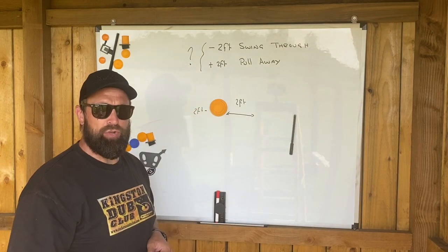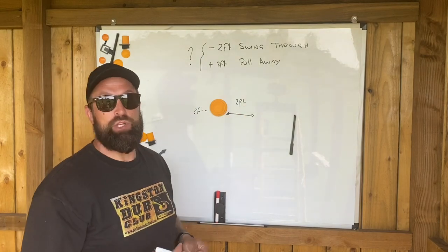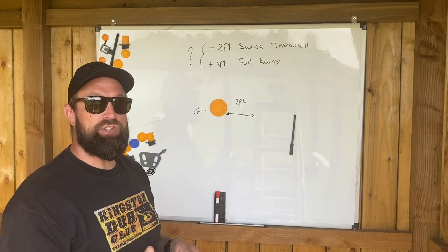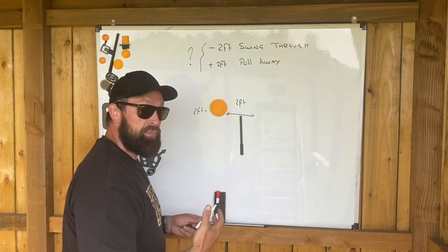This number here does change with eyesight and power. If you've got somebody with good eyes and a weaker body movement, they might be able to control up to a foot. But when I energize the gun, this is my next clear visual picture.